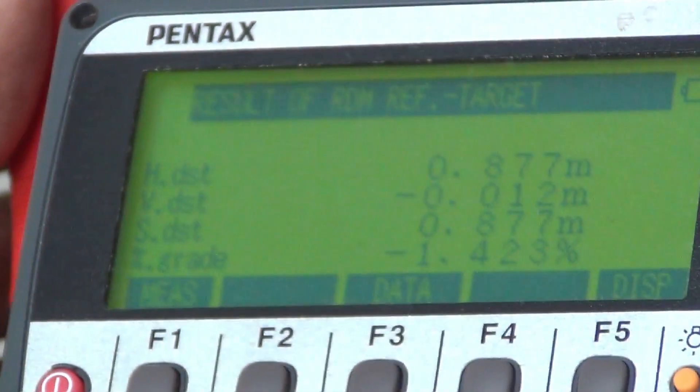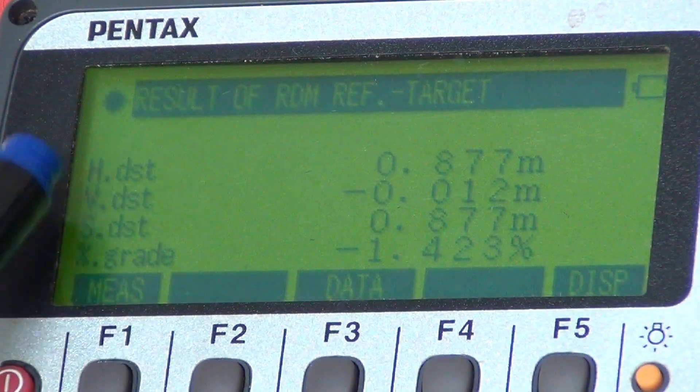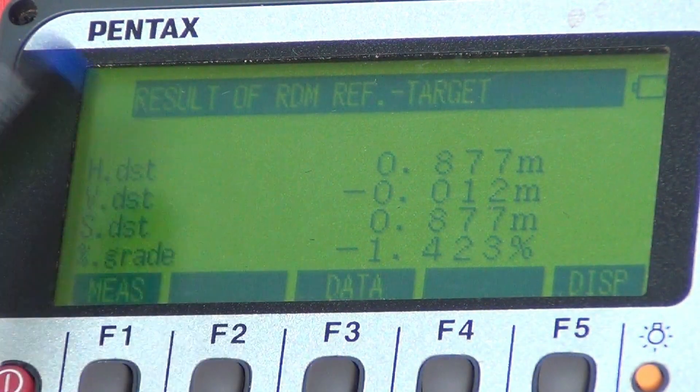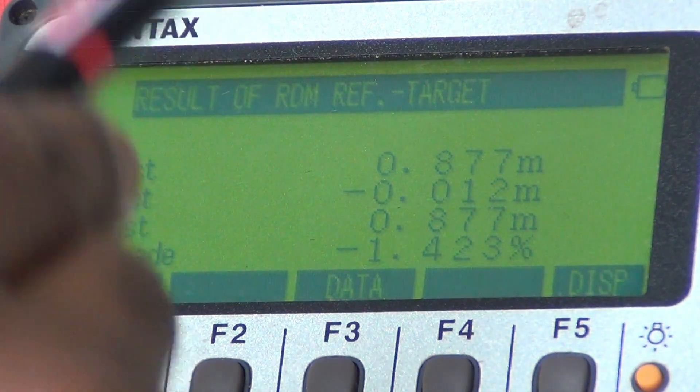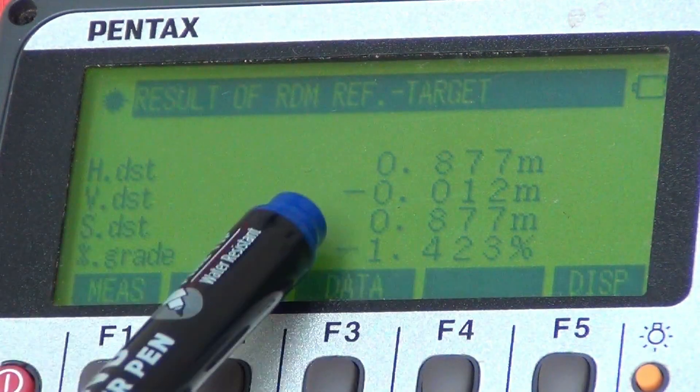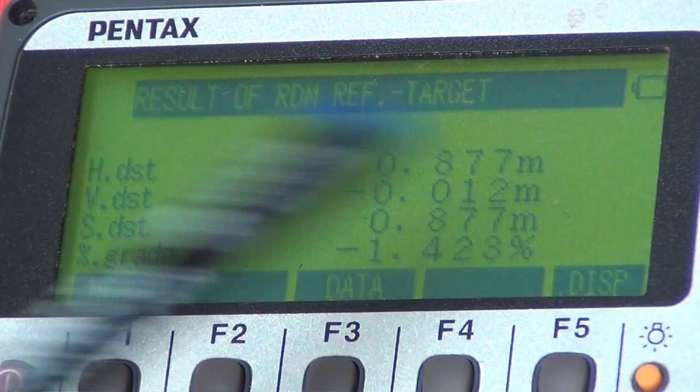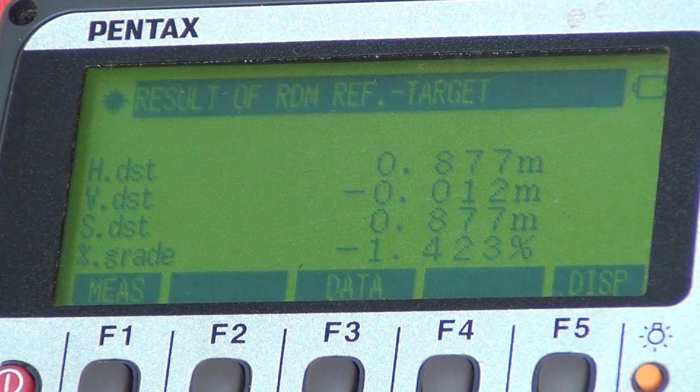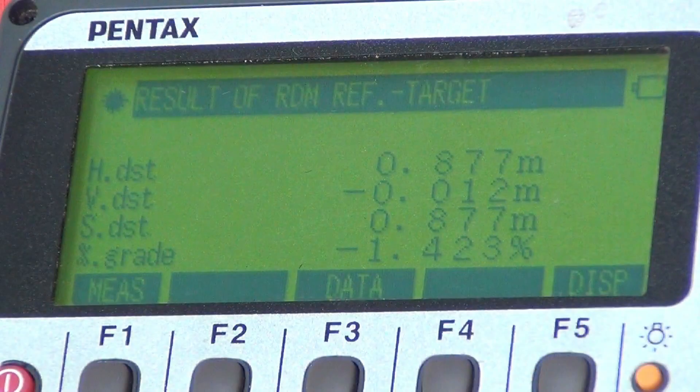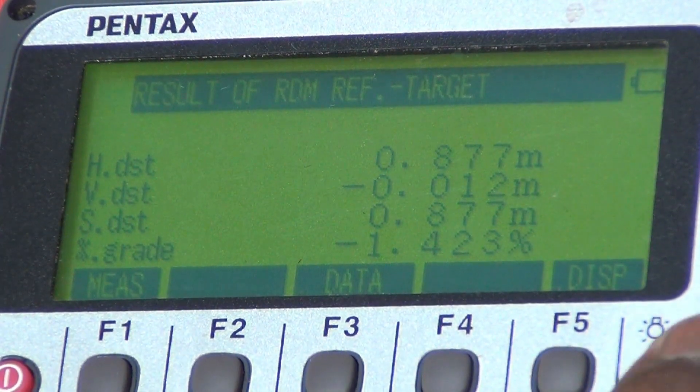Reading, the horizontal distance is 0.877 meters. If we look at this, the point in the first point we have minus 0.012 meters. The slope is the same, 0.877. This is the percentage of grade, this is the slope, this is the percentage of 1.423%. This is the RDM. If we go to the point, the RDM to reading. Thank you.